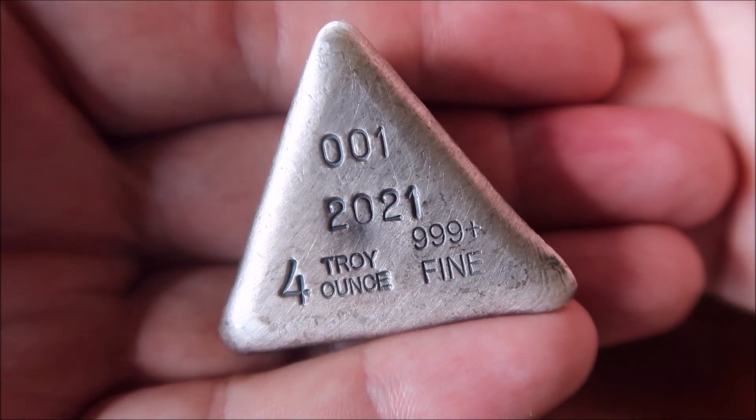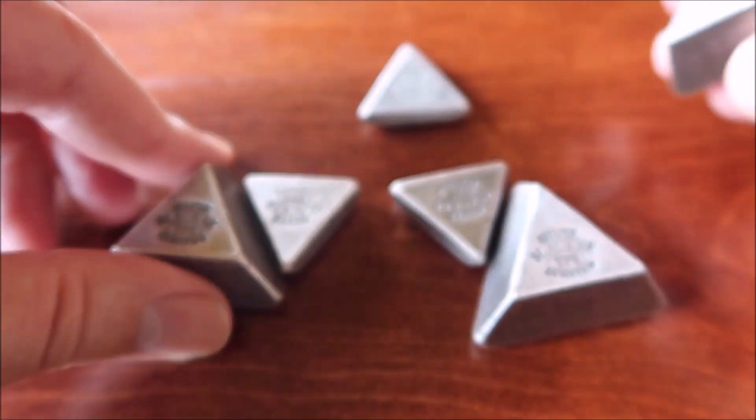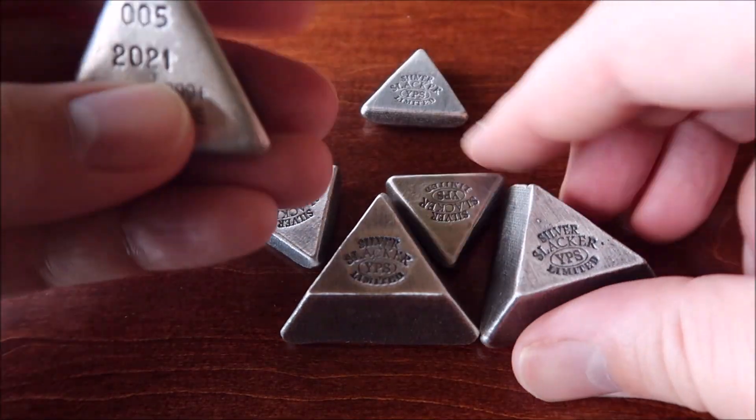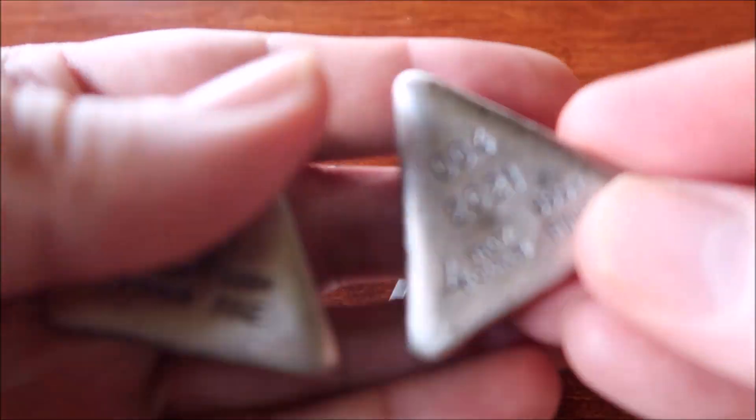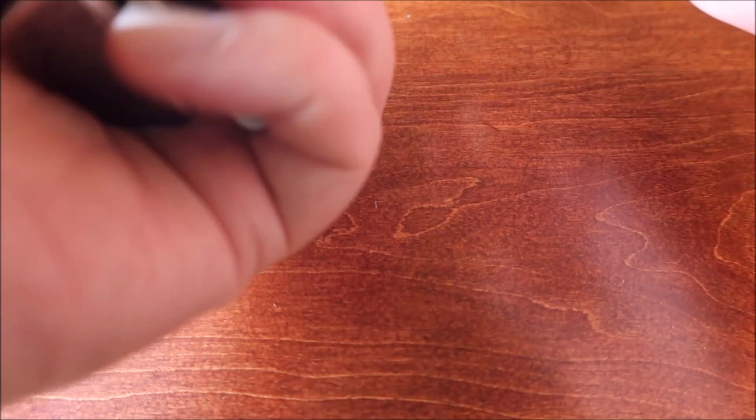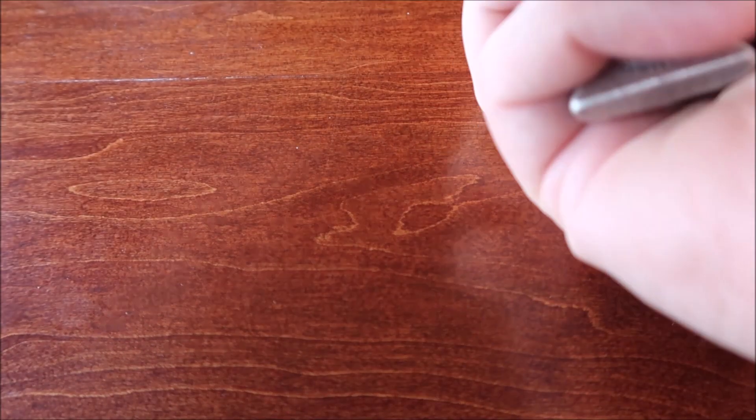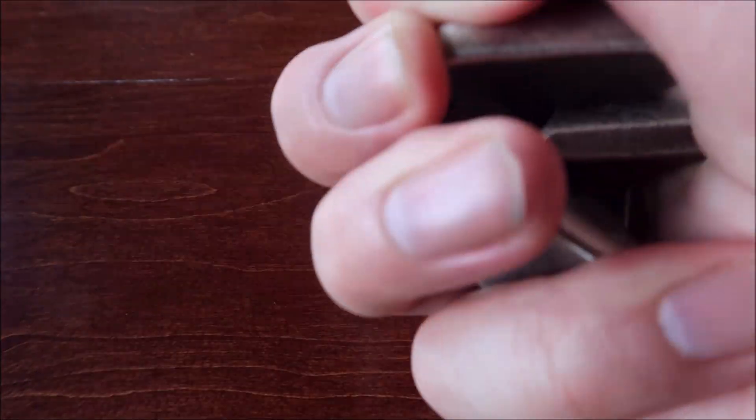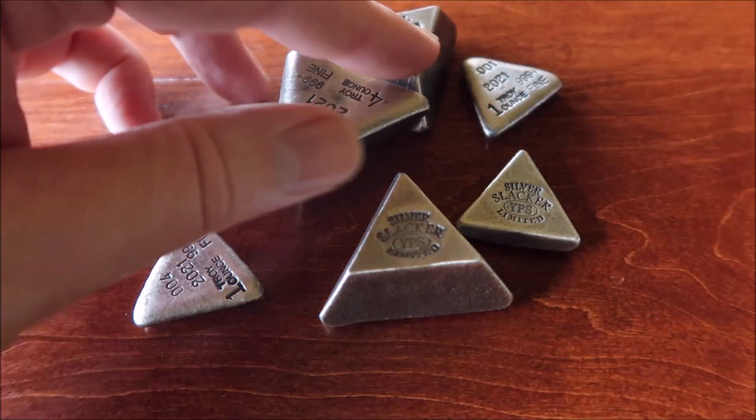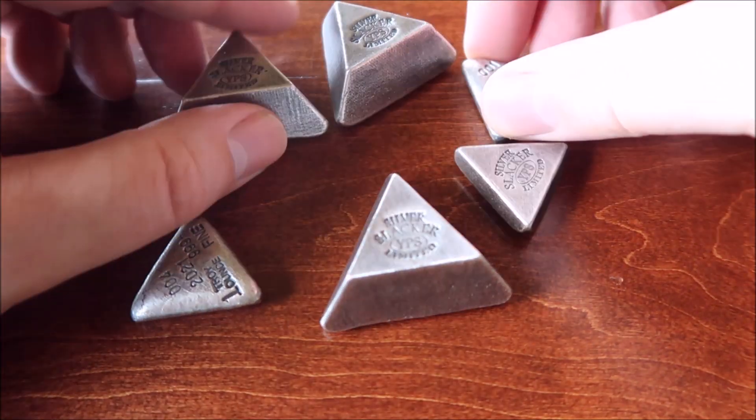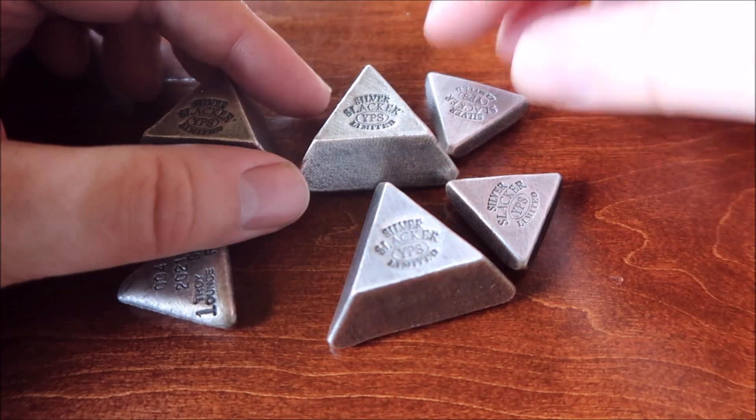There you go, number one, 2021, four ounces. Awesome. These are the other ones. These feel really good in the hands. That's the nice thing about poured silver. I don't worry about it getting scratched up or damaged or anything.